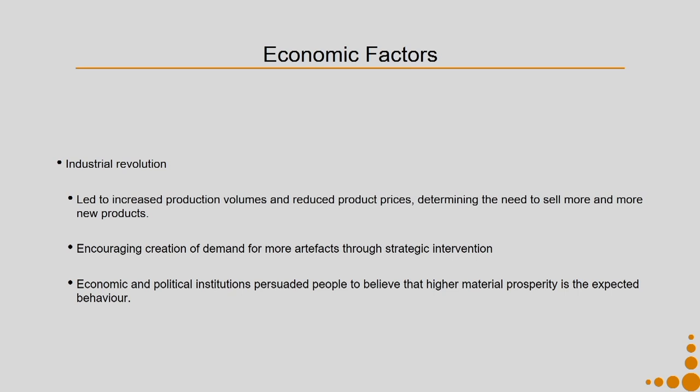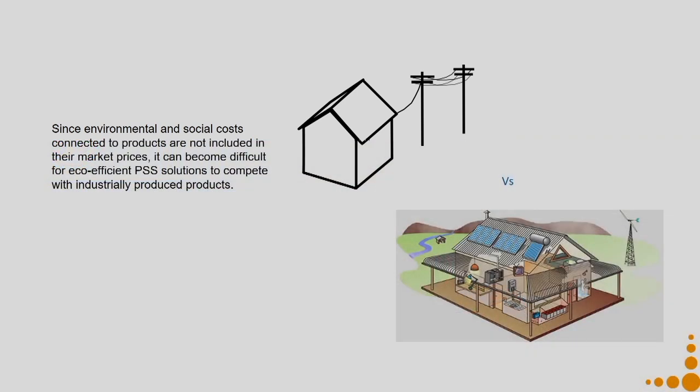Economic and political institutions also persuaded people to believe that higher material prosperity is the expected behavior. For example, how is a country's development measured? GDP - gross domestic product - which means how much you consume, the per capita consumption. The political institution persuaded people to consume more and more because your country's development is now measured in terms of GDP. Bhutan came up with an interesting measure - the Gross Happiness Index - measuring development in terms of how happy your people are rather than product consumption. Consider two options: electricity produced by grids versus solar or wind energy generation.